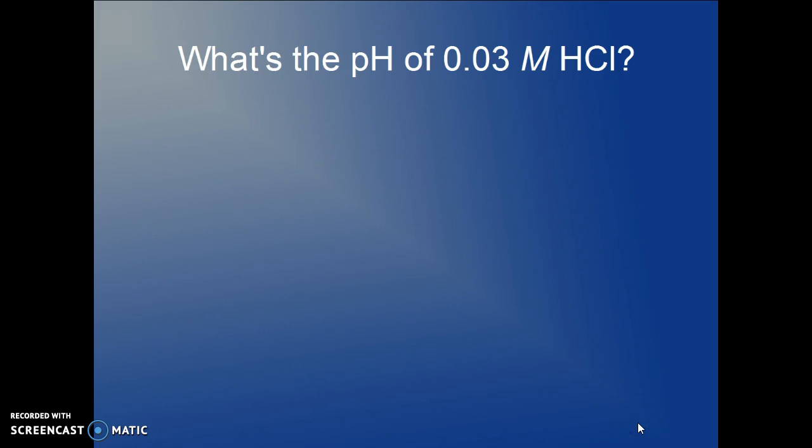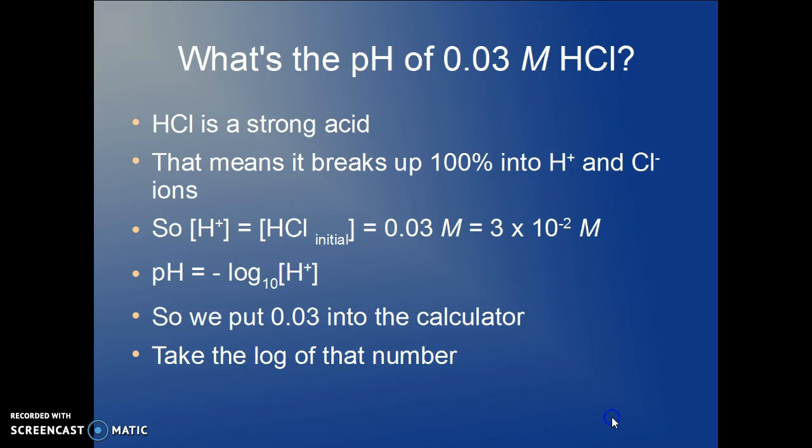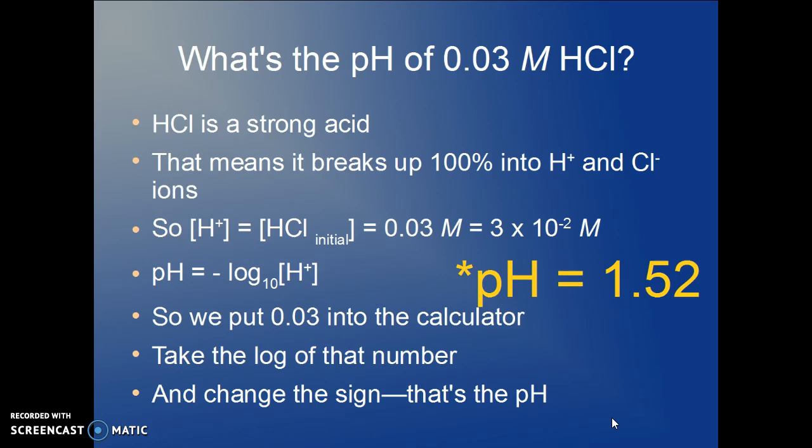How about 0.03 molar hydrochloric? What if we get off of this even number here? We do the same type of reasoning. The hydrogen ion concentration is 0.03 molar. And we find the pH is 1.52. And that's not surprising because it's greater than 10⁻², so it ought to be somewhere between 1 and 2 pH.